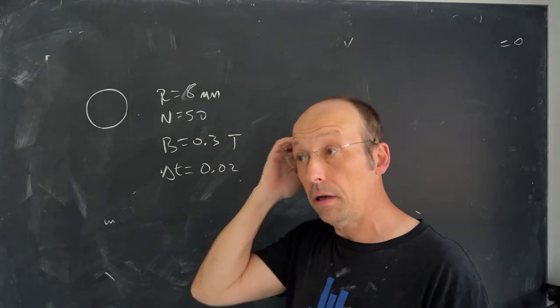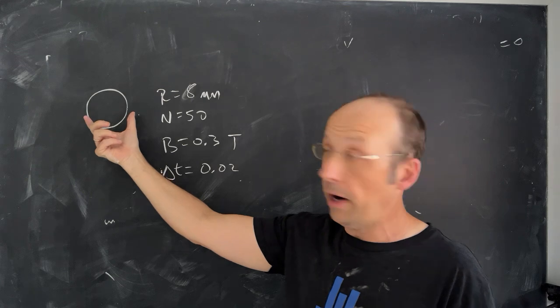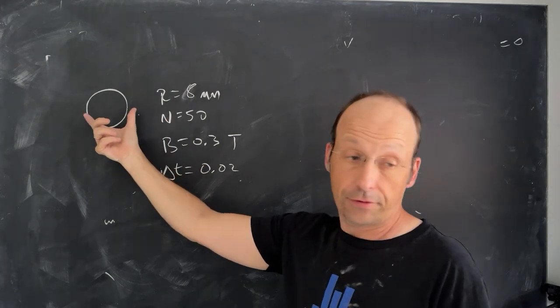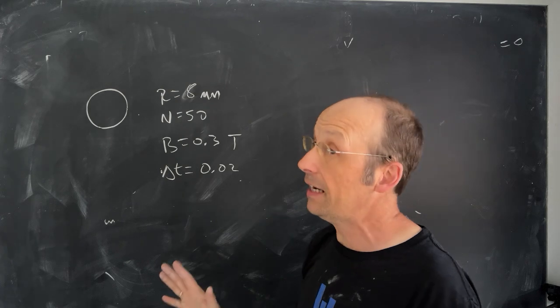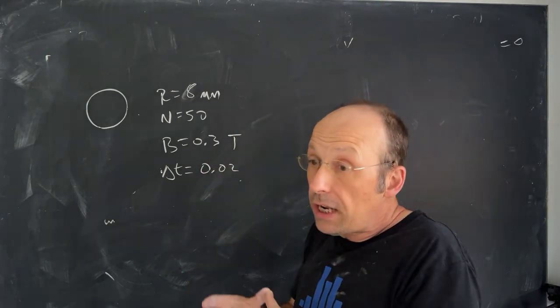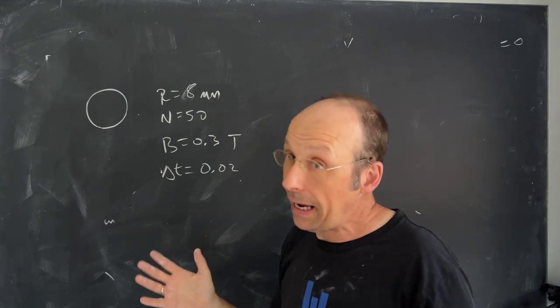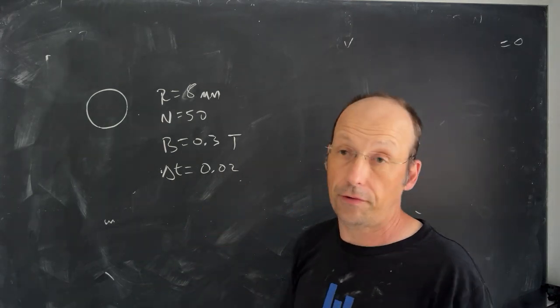Here is another problem that I made up. There's a coil, a coil of wire with a radius of 8 millimeters, so it's a circle, and it has 50 turns. This is placed in a uniform magnetic field of 0.3 tesla. If I rotate the coil in some manner in a time of 0.02 seconds, what's the EMF produced around the coil?